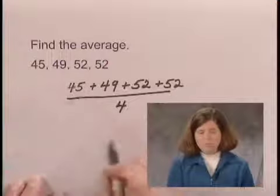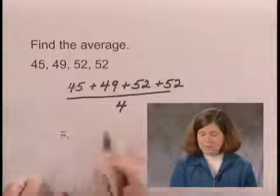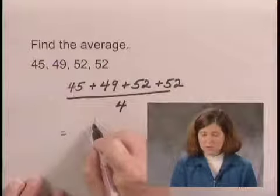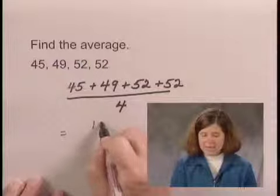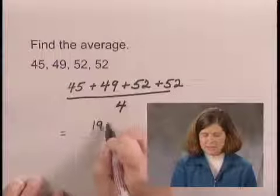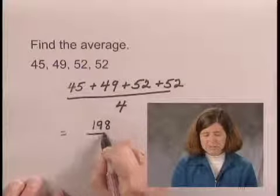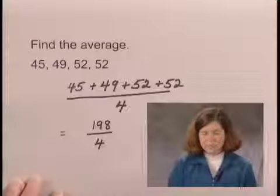When we add in the numerator, the sum of the numbers is 198. So we add first, and then we divide by 4.